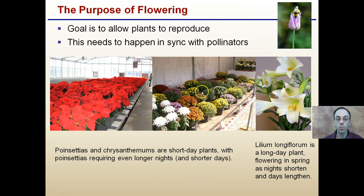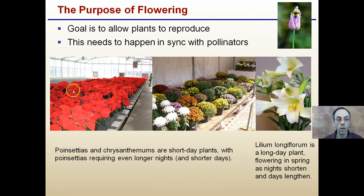Poinsettias and chrysanthemums are short-day plants, requiring longer nights — or what we think about as shorter days — to flower. This is why we typically see these produce their vibrant colors in the wintertime. Lilies, for example, are long-day plants and they flower in the spring as the days lengthen.